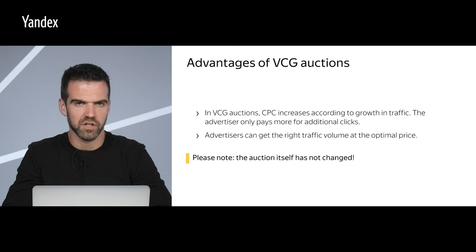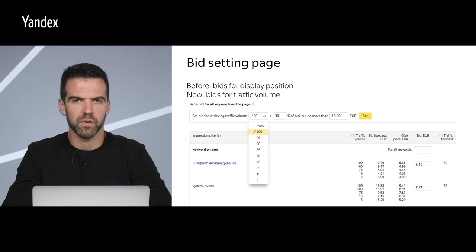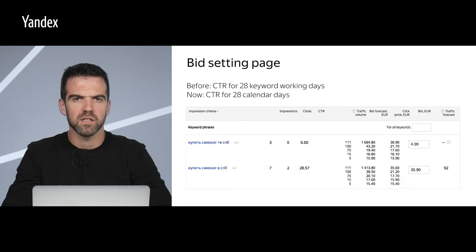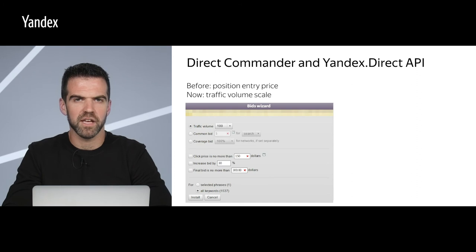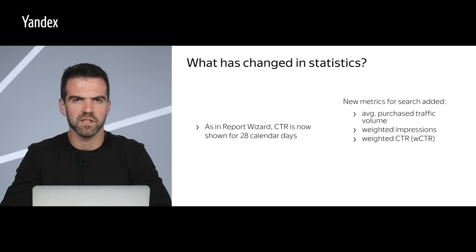Please note that the auction itself has not changed. Now let's look at what has changed in the interface. You will now see traffic volume instead of display positions. CTR is now shown for 28 calendar days. Direct Commander and the Yandex Direct API now show a traffic volume scale. You may have already noticed that Report Wizard opens by default when you go to your statistics — this is the most detailed interface for getting statistics. CTR, just like in Report Wizard, is now shown for 28 calendar days.